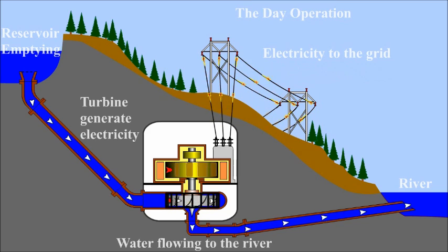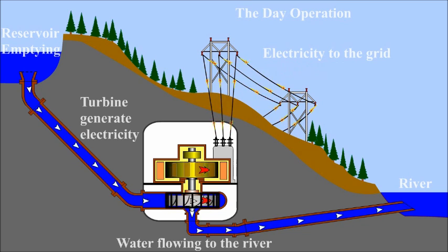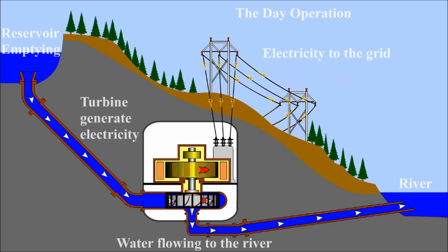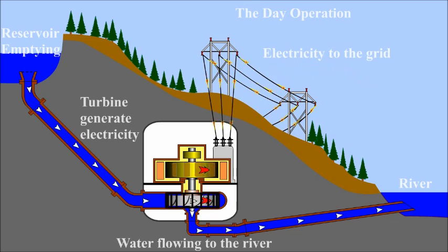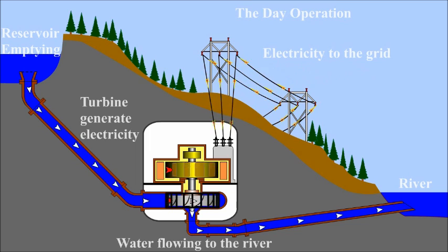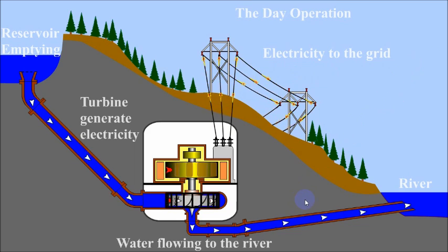Pumped storage stations harness these price differences to generate the revenue to justify their existence and construction. By acting as giant energy storage systems, these vital stations regulate power production and its price. They also regulate the climate of their surroundings by acting as giant thermal storage systems. We can also think of a regular dam as a pumped storage system where the pumping is done by the sun. We appreciate if you rate this video and subscribe to our channel. Thank you for watching.